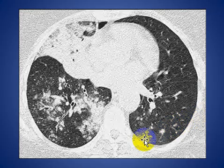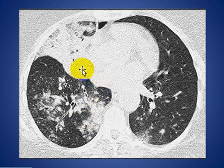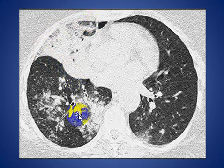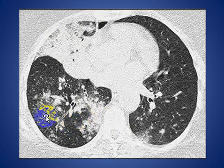Here is a patient with bilateral consolidation, more to the right side, with some volume loss involving the middle lobe and lower lobes. There is consolidation and ground-glass opacity with some nodularity. In this patient, the diagnosis is bronchoalveolar carcinoma.